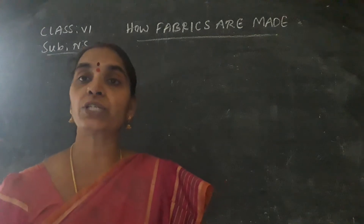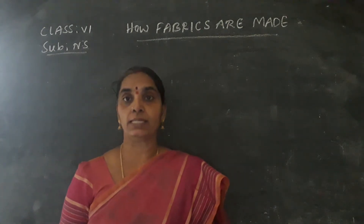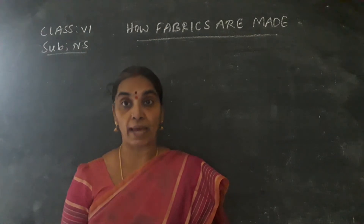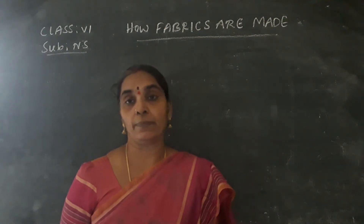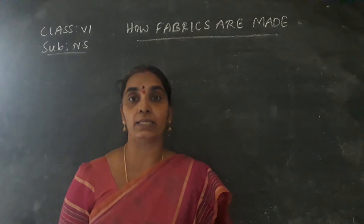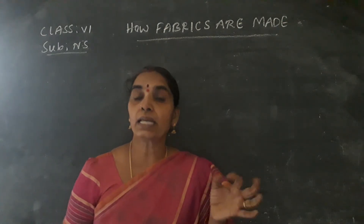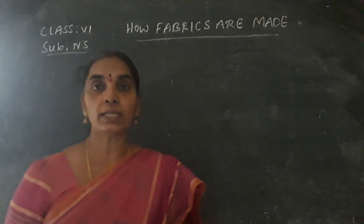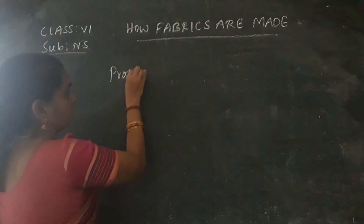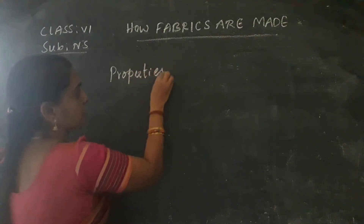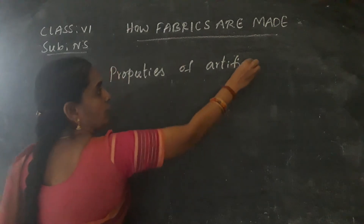As you know well, artificial fibers are man-made fibers made from chemicals. So they are called man-made fibers or synthetic fibers. Since they are made from chemicals, they are also called chemical fibers. So what are the properties of artificial fibers? Today we will see the properties of artificial fibers.